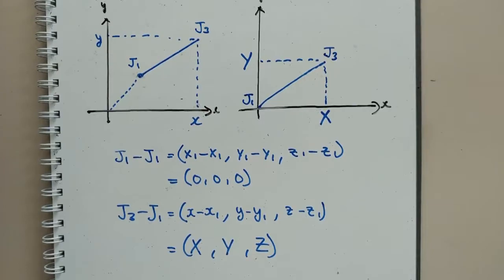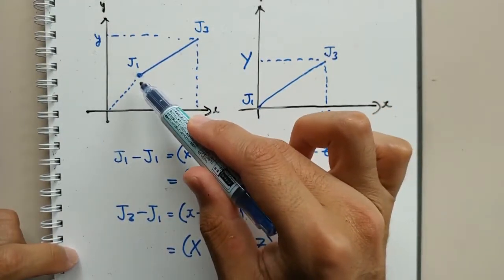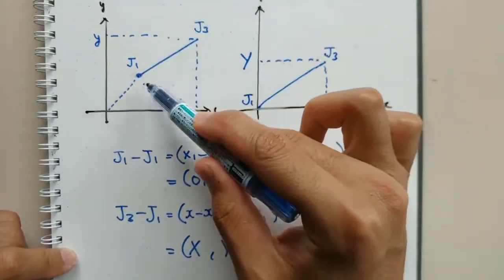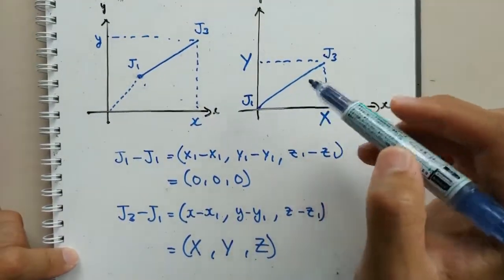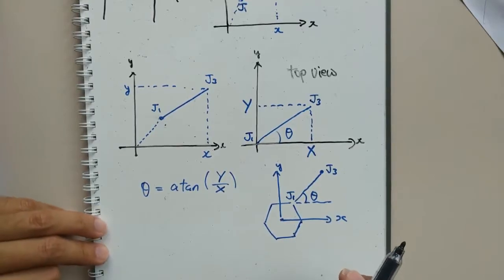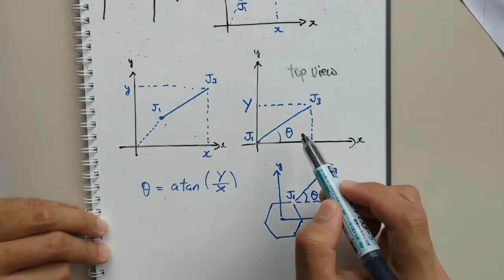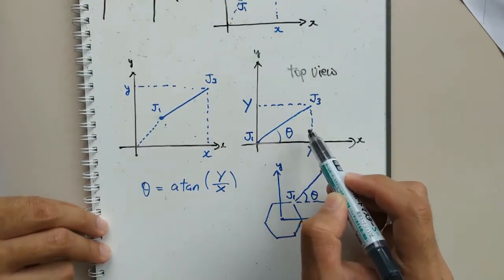This is very simple to do by just subtracting the coordinate of joint 1 from each joint. With the offset removed, we can find the first output, angle theta, using the inverse tangent function.